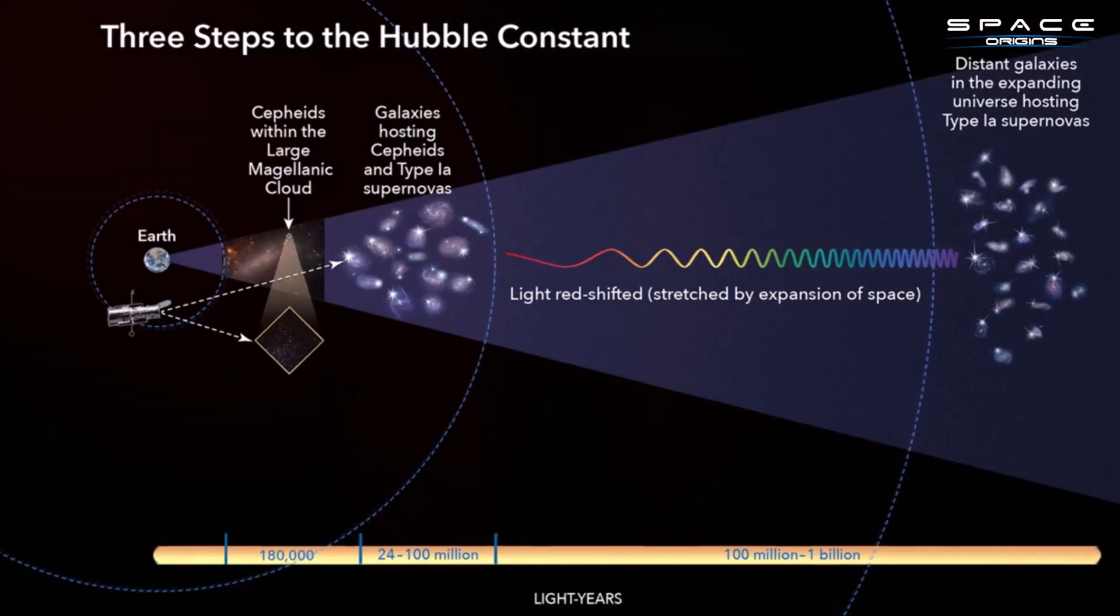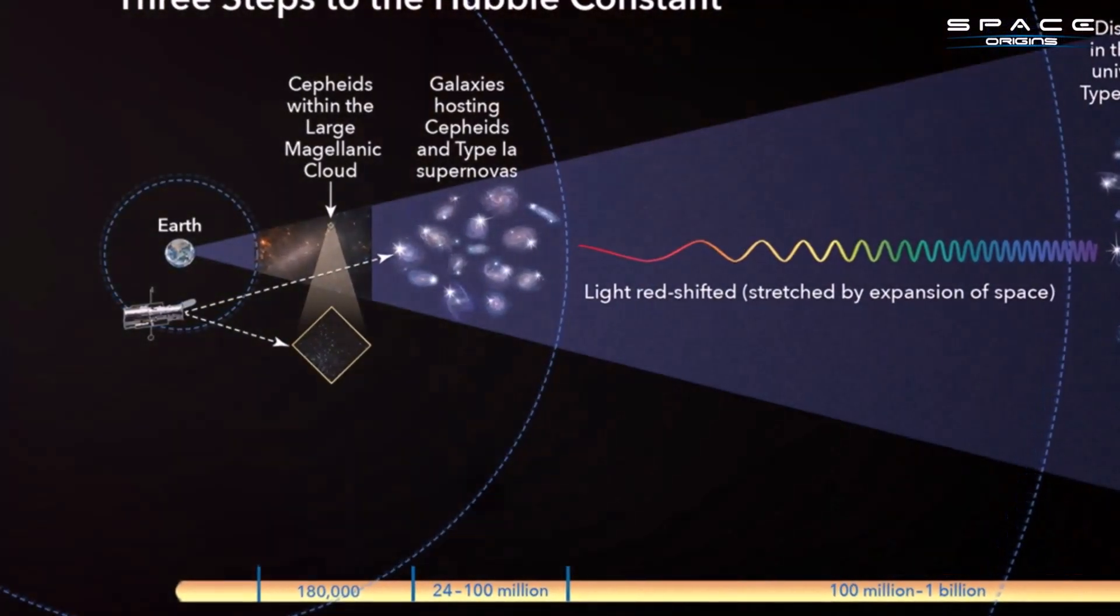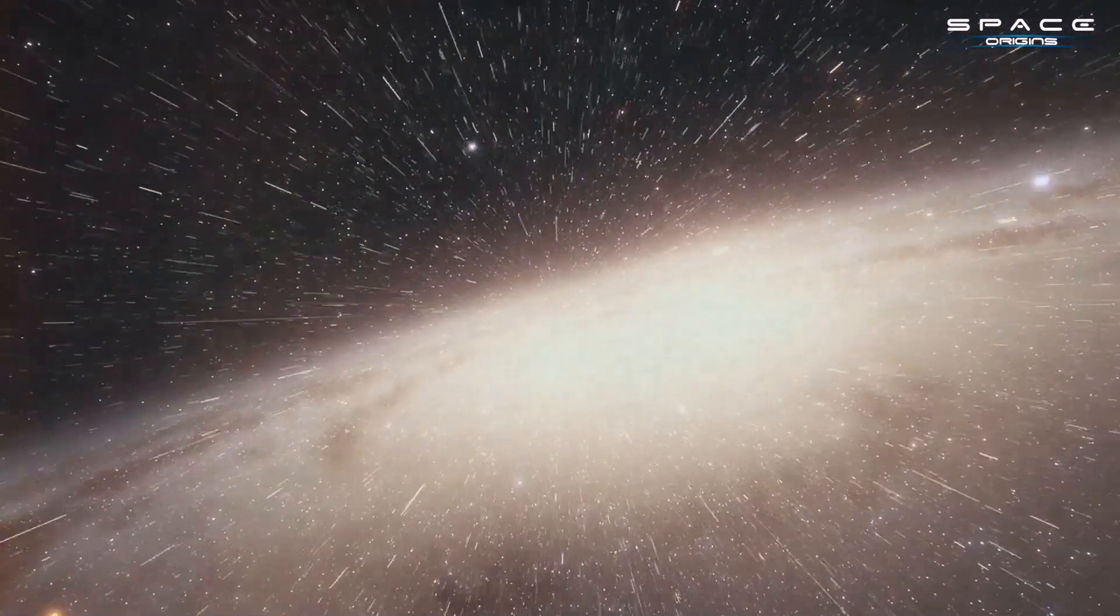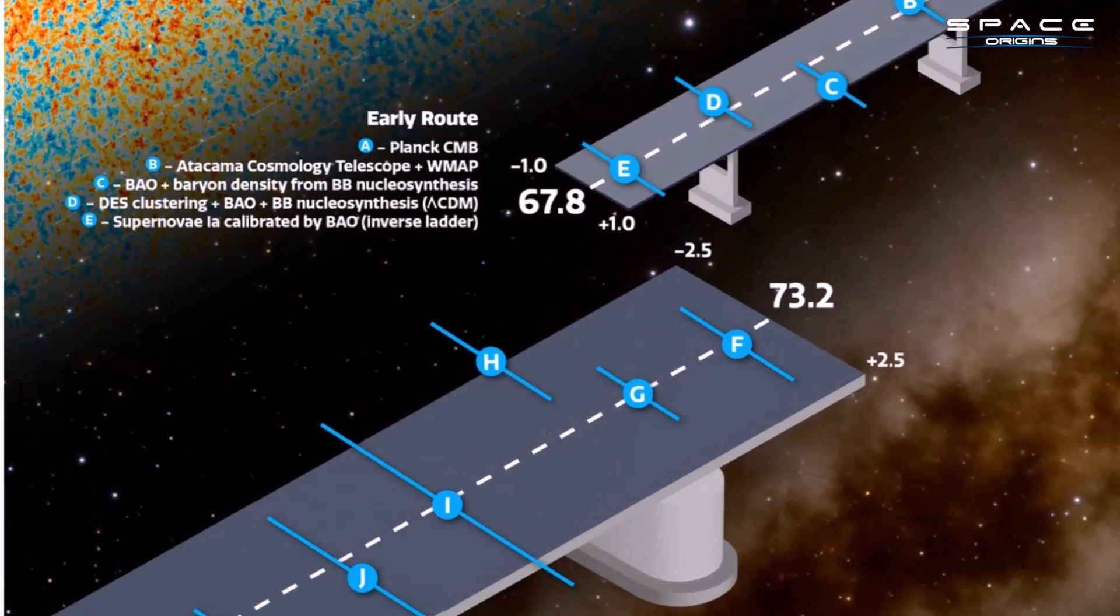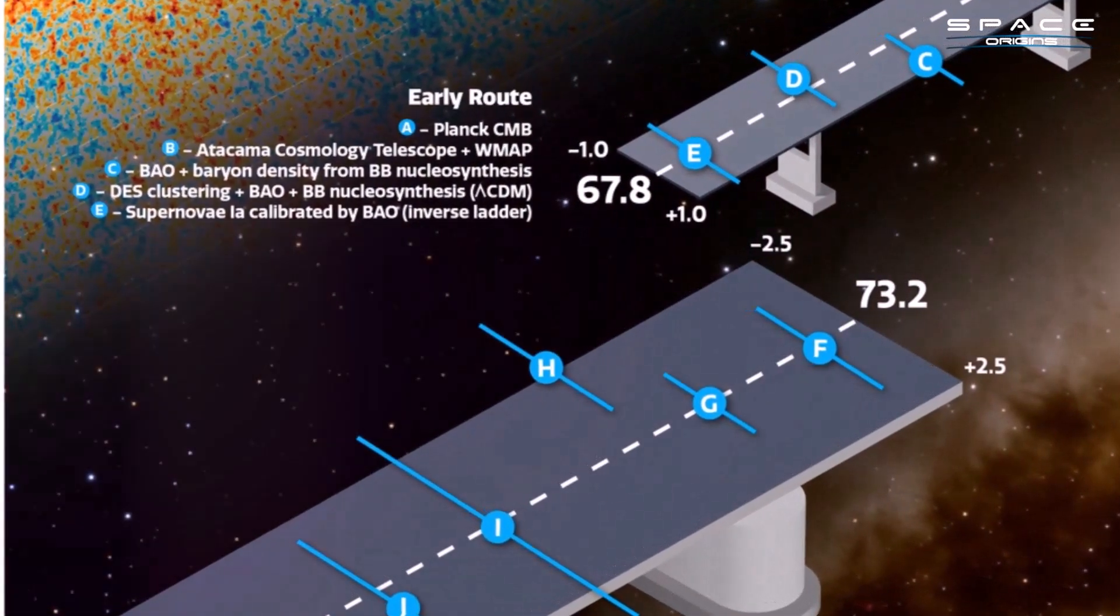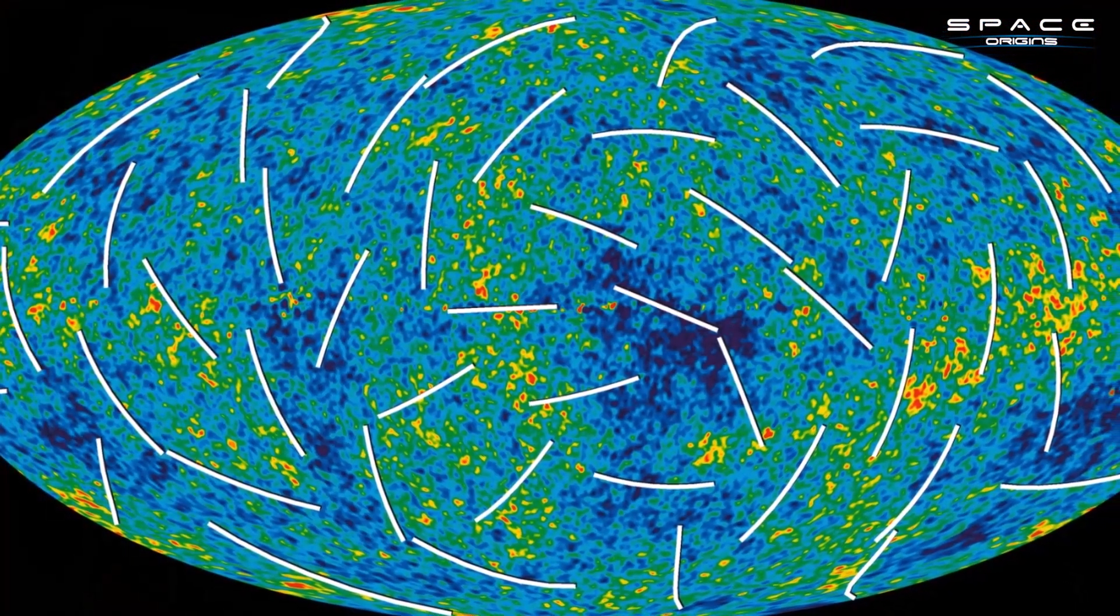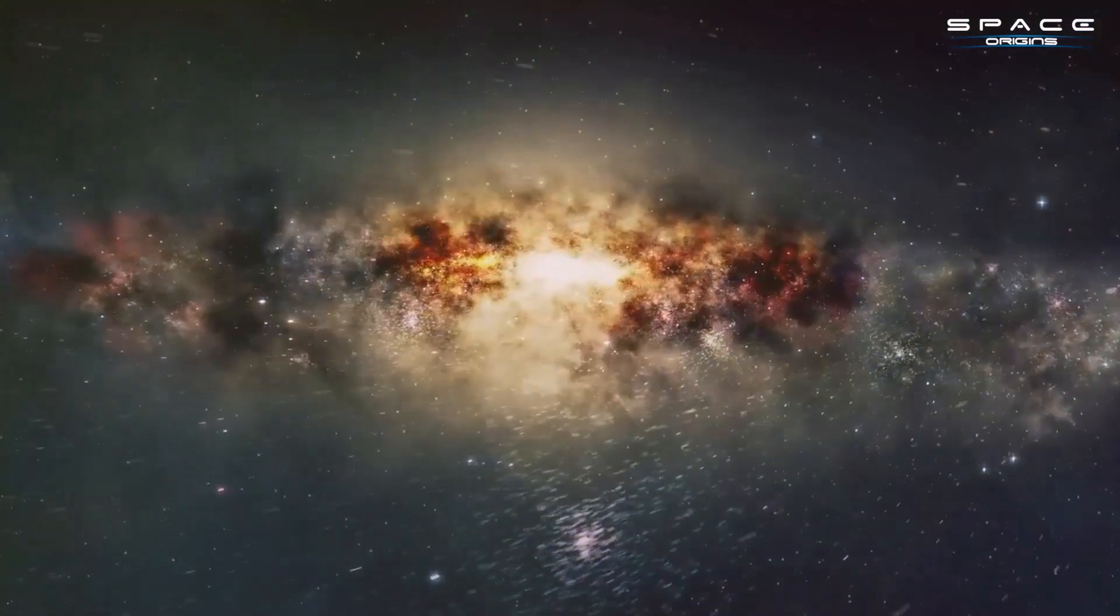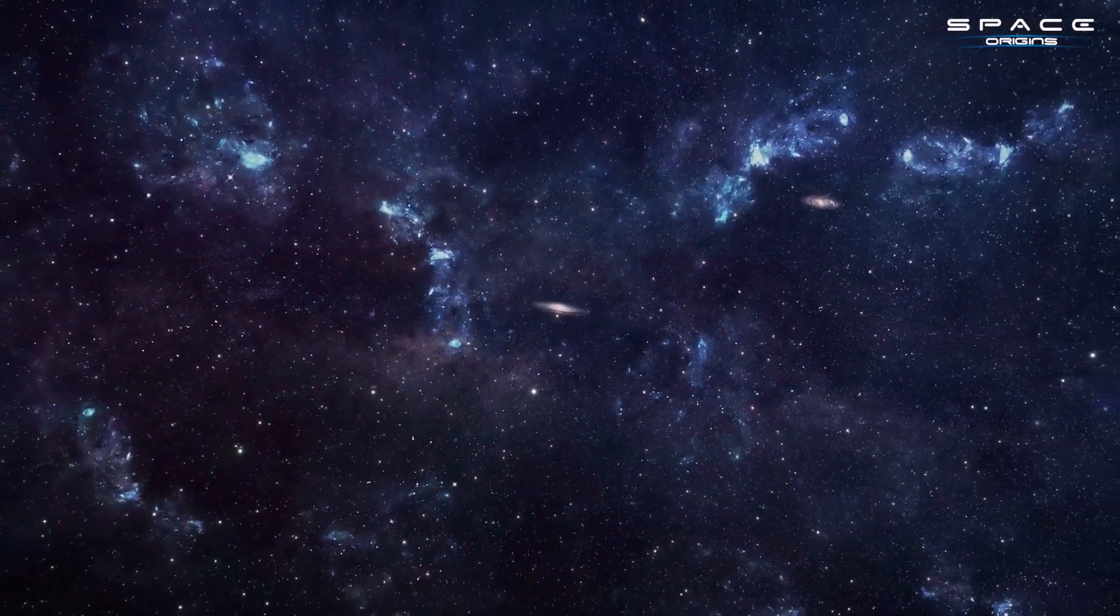We now move on to the eighth discovery, which takes us into the realm of cosmic speedometers. The Hubble constant, a critical parameter for estimating the universe's expansion rate, has long been a subject of debate among astronomers. The James Webb Space Telescope has thrown its hat into the ring with its observations of Cepheid variables, pulsating stars used to measure distances in the universe. These observations have deepened the ongoing debate. On one hand, measurements based on the cosmic microwave background suggest a slower rate of expansion. On the other hand, measurements based on Cepheid variables and supernovae imply a faster rate. The JWST's observations have added another layer of complexity to this cosmic conundrum.